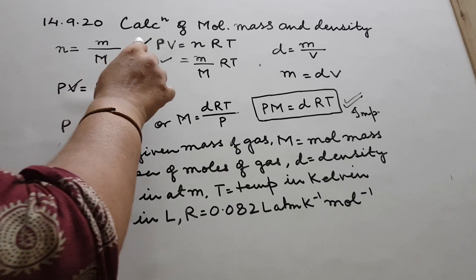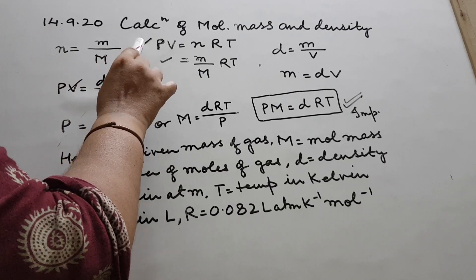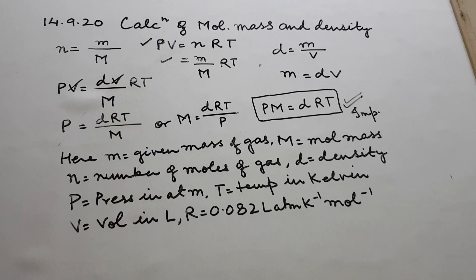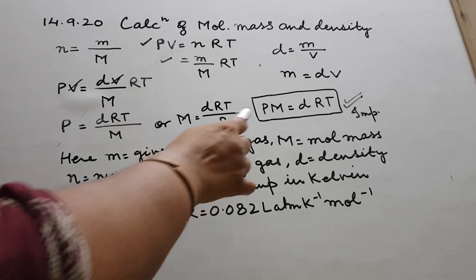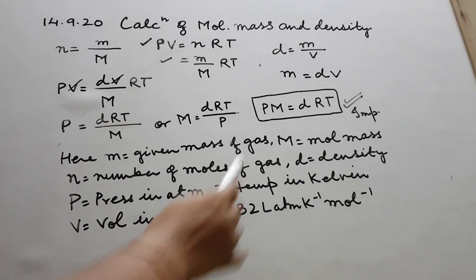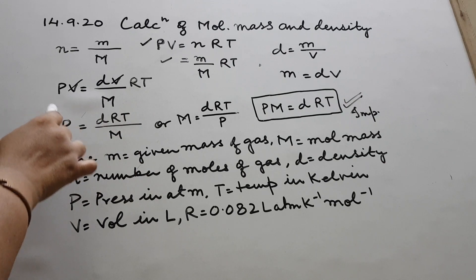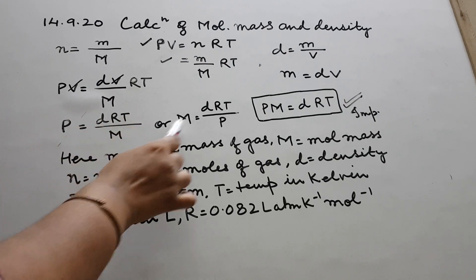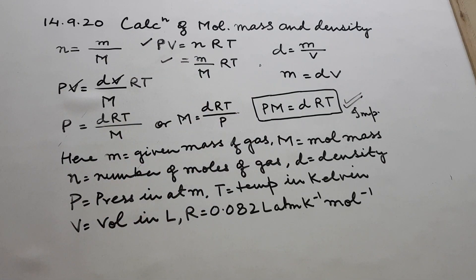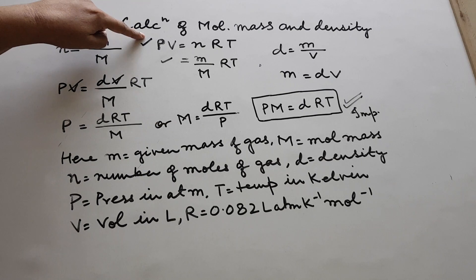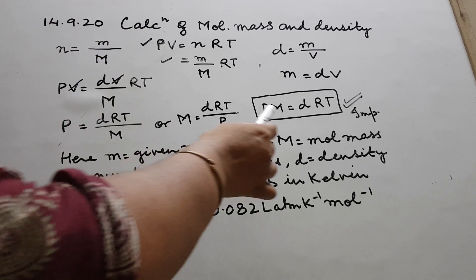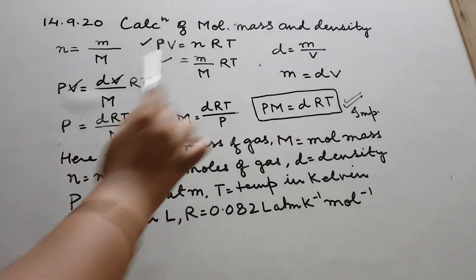So children, we use two forms: the first equation is PV = nRT, and the second equation which we will use is PM = dRT. You need to remember both of these equations.